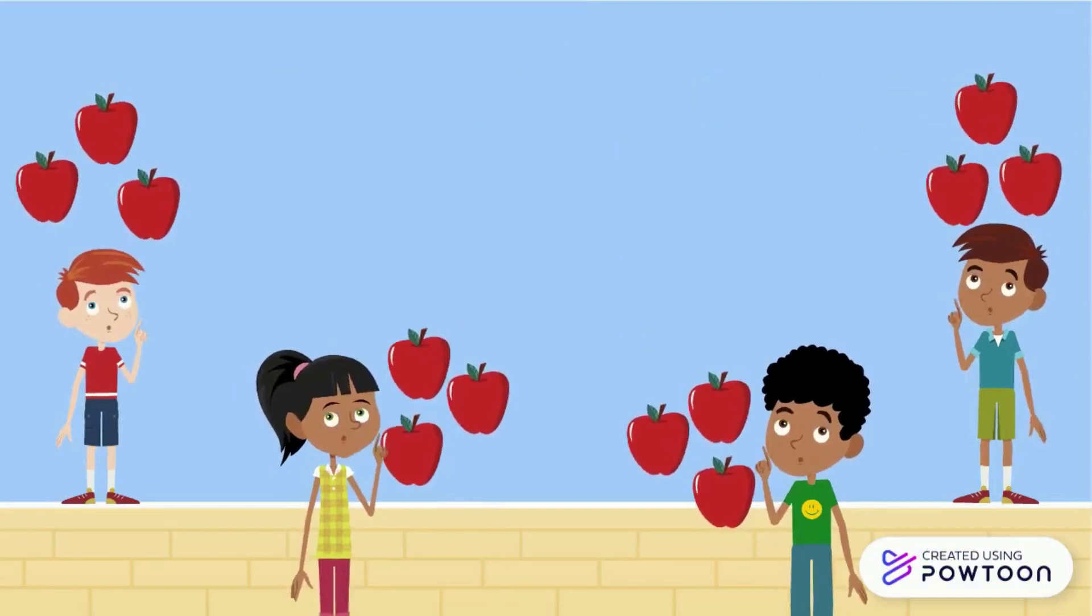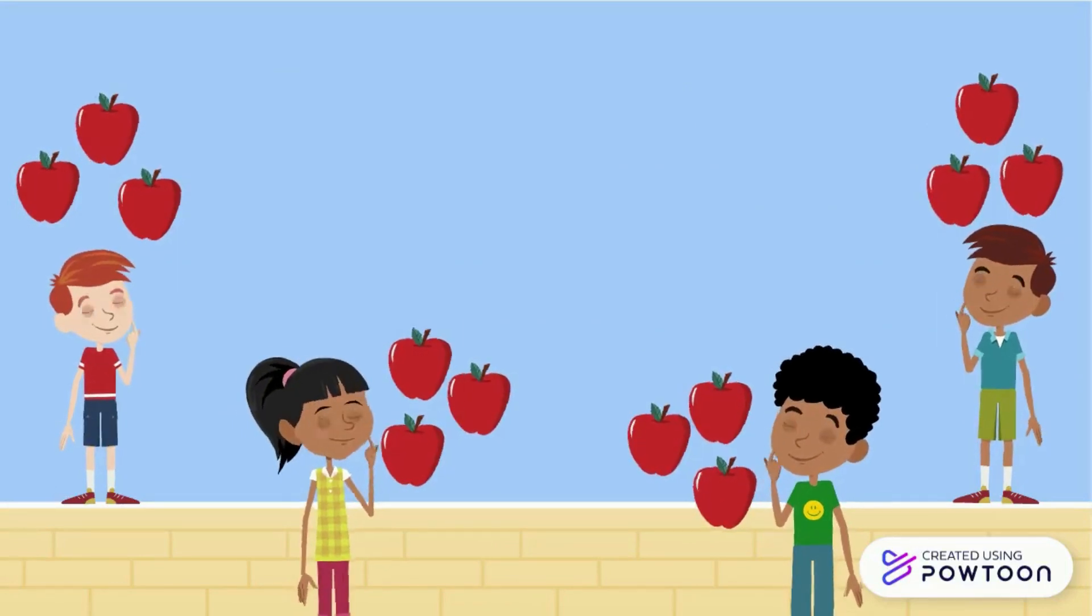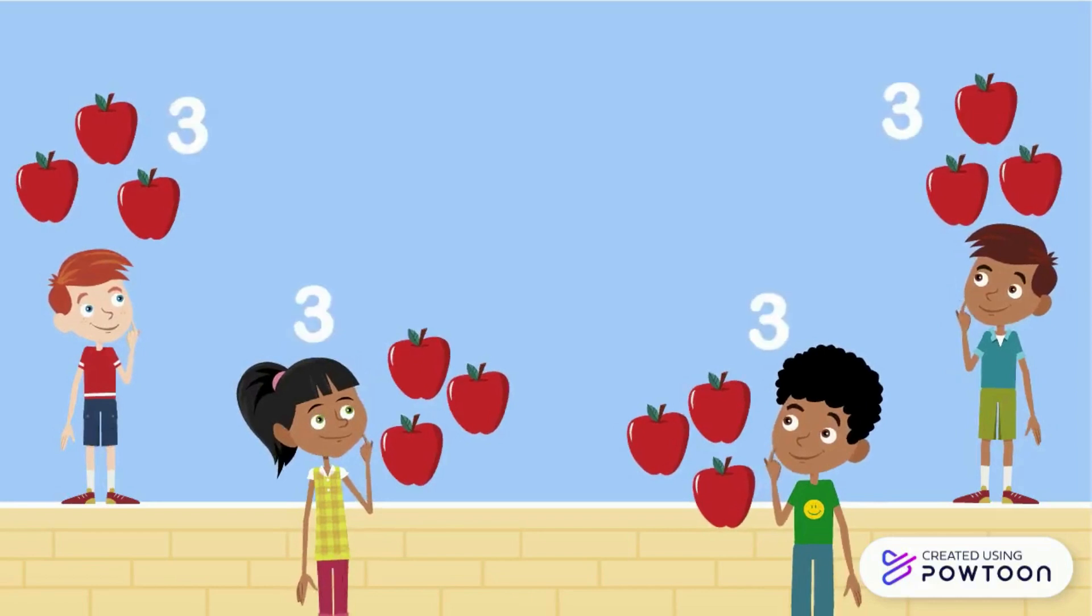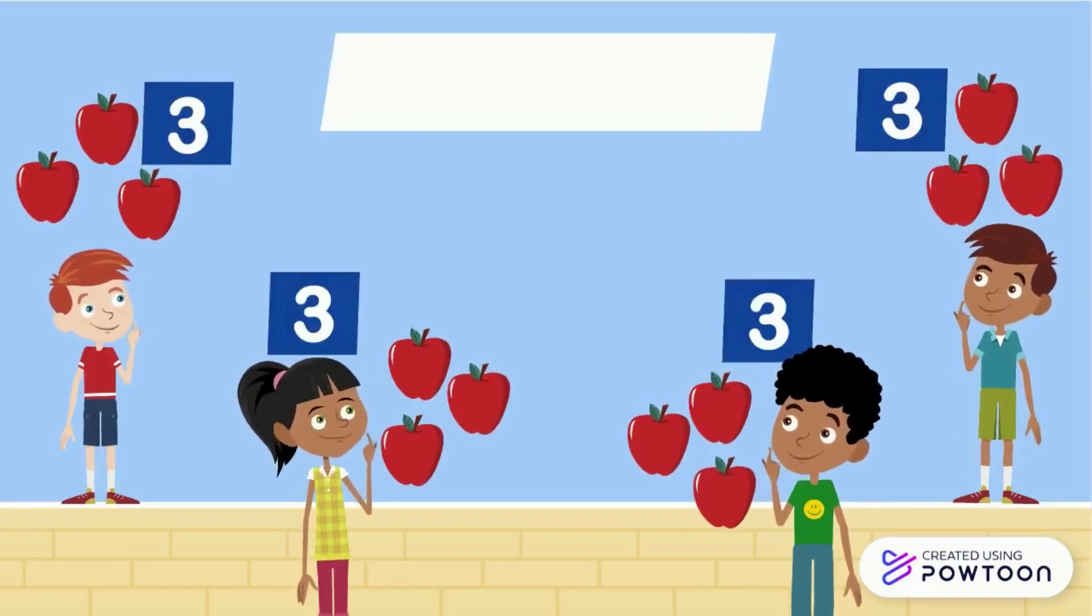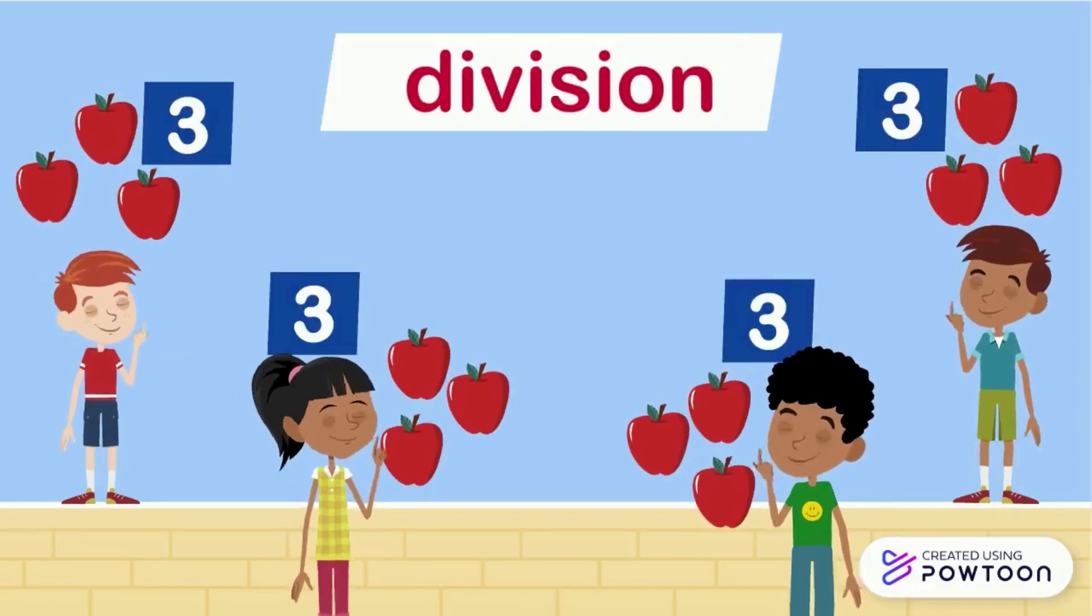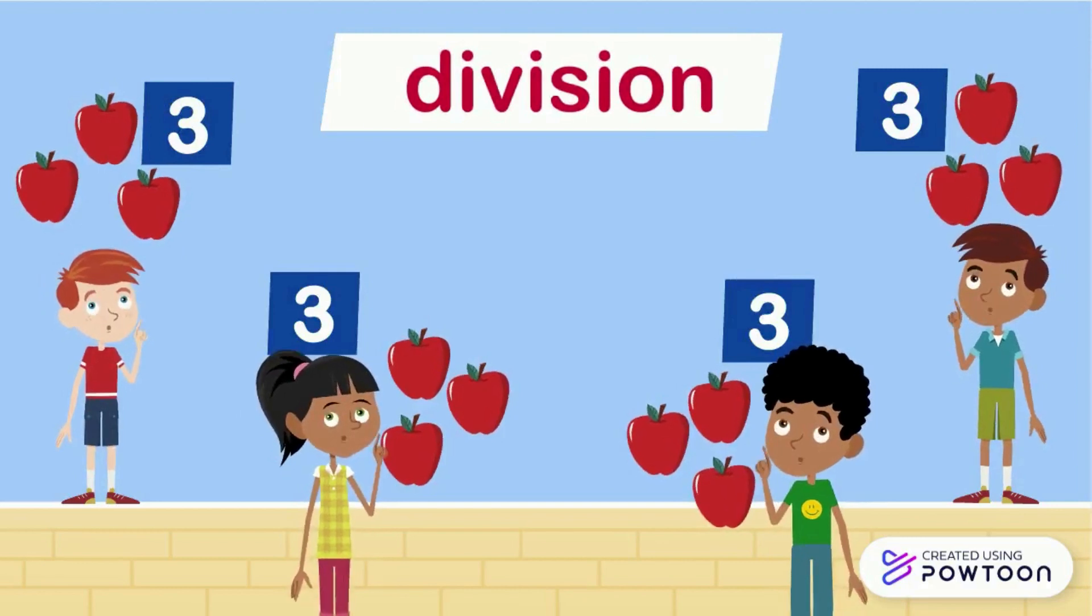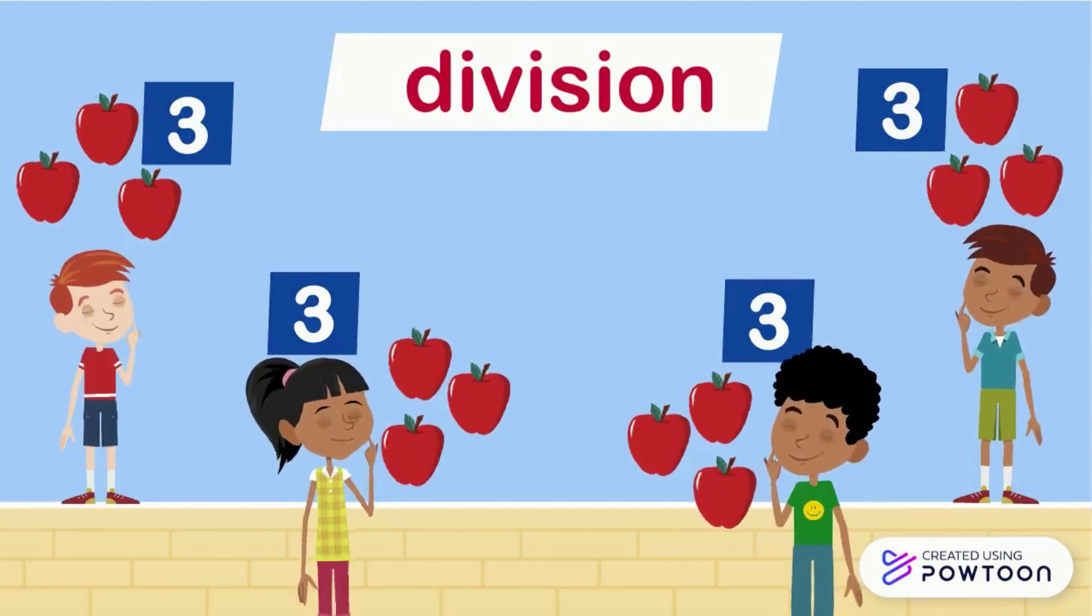We shared the 12 apples equally between these four children, so each one will have three apples. We call this procedure division. We distributed these 12 apples between four children, so each child took three apples.